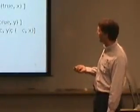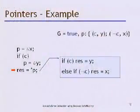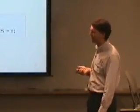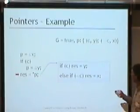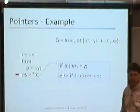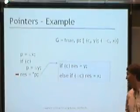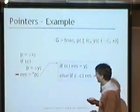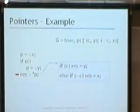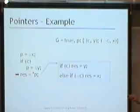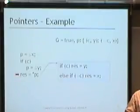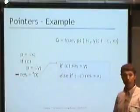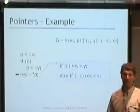For pointer dereference — say assigning star-P into a variable 'res' — since we're analyzing the function body forward in control flow order, we know what the points-to set looks like at that point. Rather than build a special-purpose analysis for *P, we rewrite it as a conditional assignment: if c is true, then res is y; else if not-c, res is x. We take the guarded points-to set and translate it into this conditional assignment, and because we do a good job with heap, pointers, and path sensitivity, this gives the right answer.